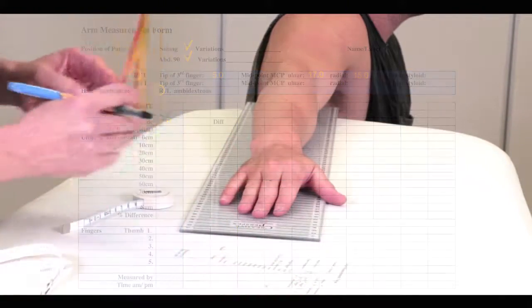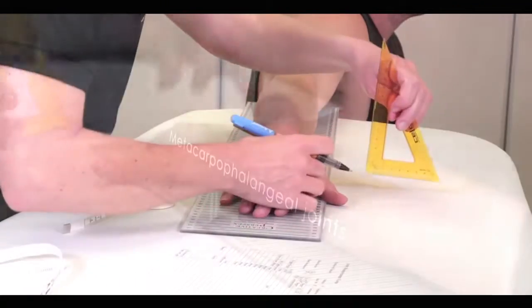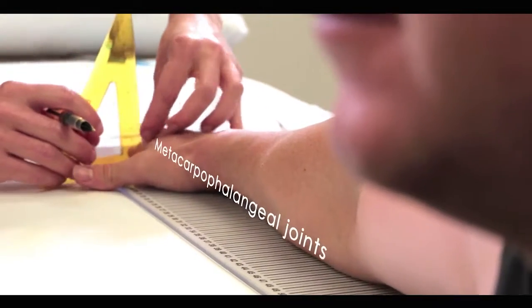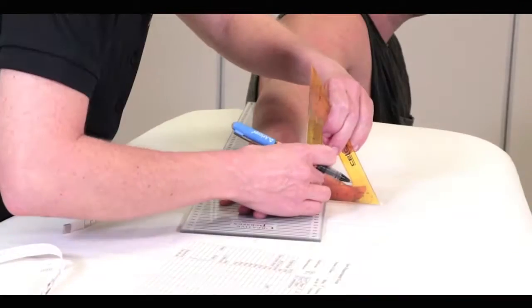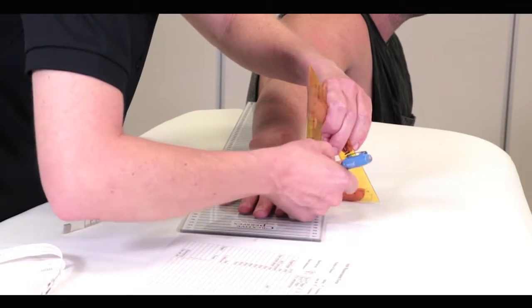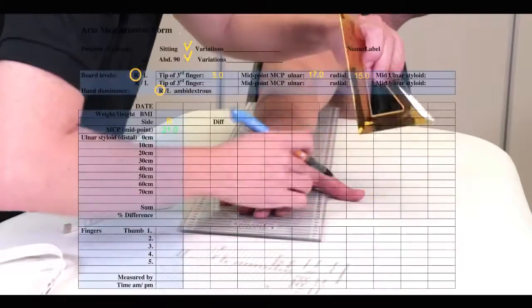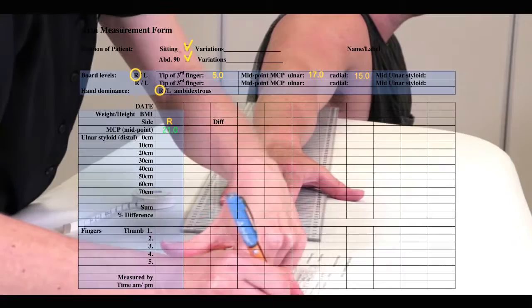To find the metacarpophalangeal joints, feel for the joint line with the hand flat on the board. Mark the hand on the radial or thumb side and on the ulnar side at the metacarpophalangeal joints. Record these positions on the board on the arm measurement form.